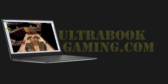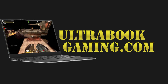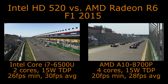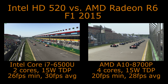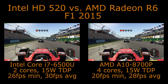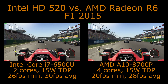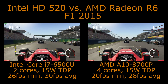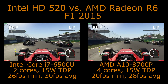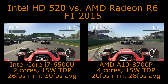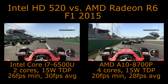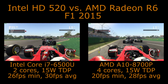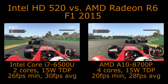Hi, I'm James and in this video I'm taking a look at F1 2015 and the Core i7-6500U and AMD A10-8700P processors. This is Intel HD 520 graphics versus AMD Radeon R6 graphics. Both systems configured identically at 1280x720P and the ultra-low detail settings except for shadows.